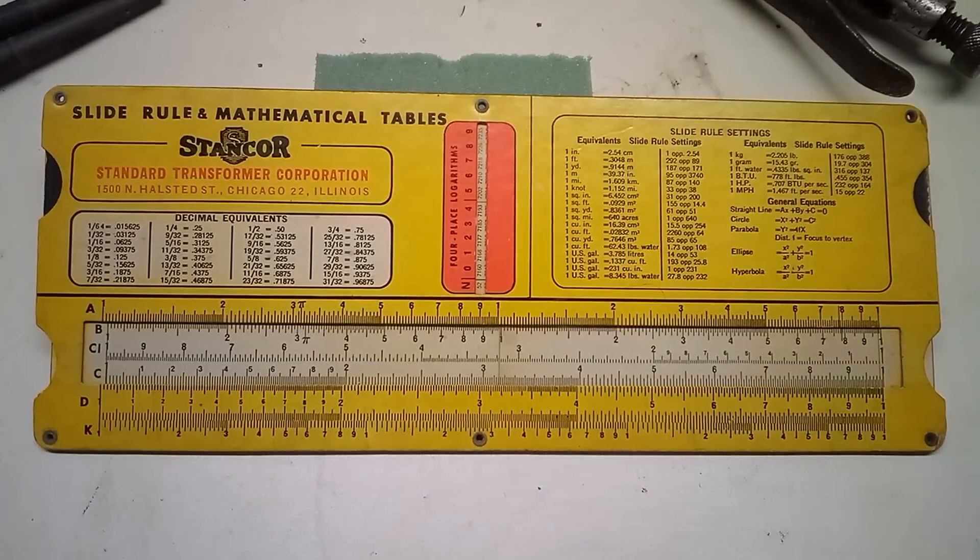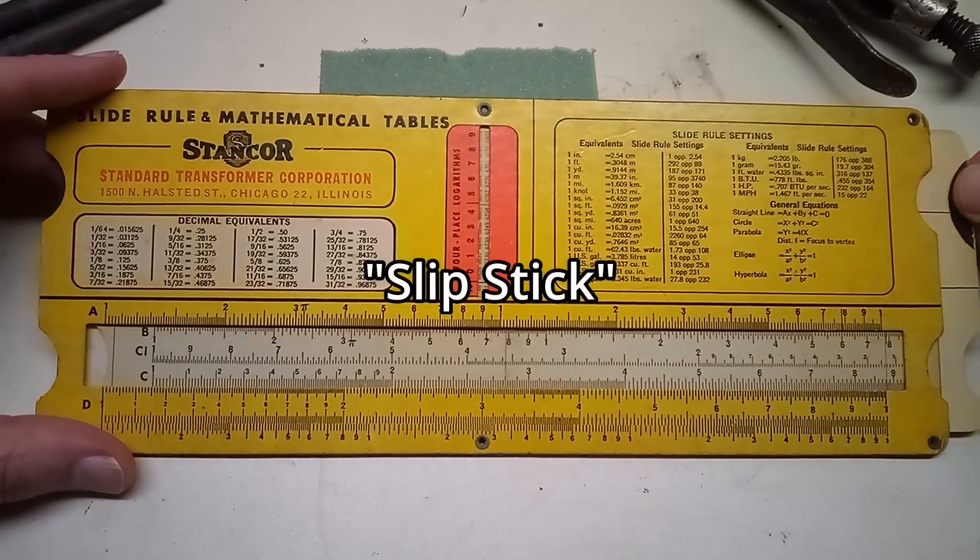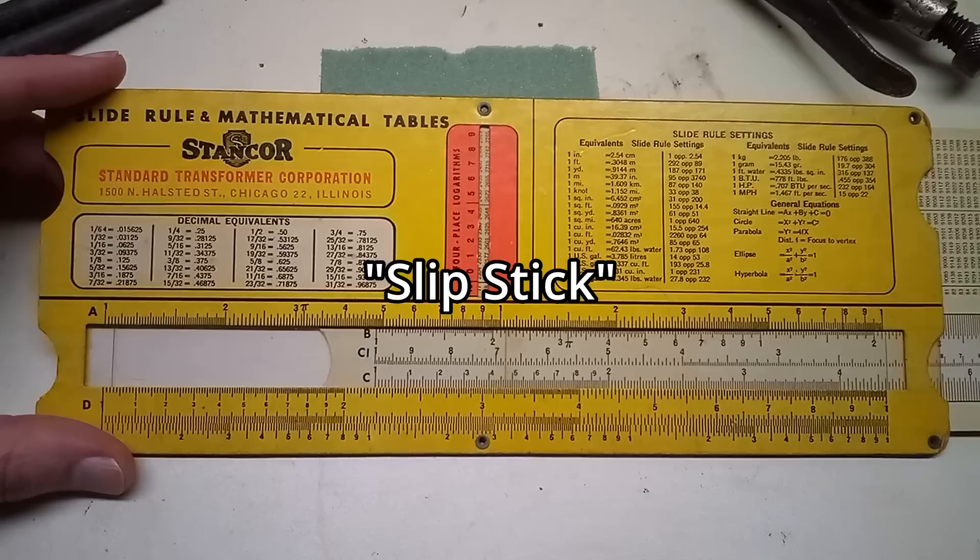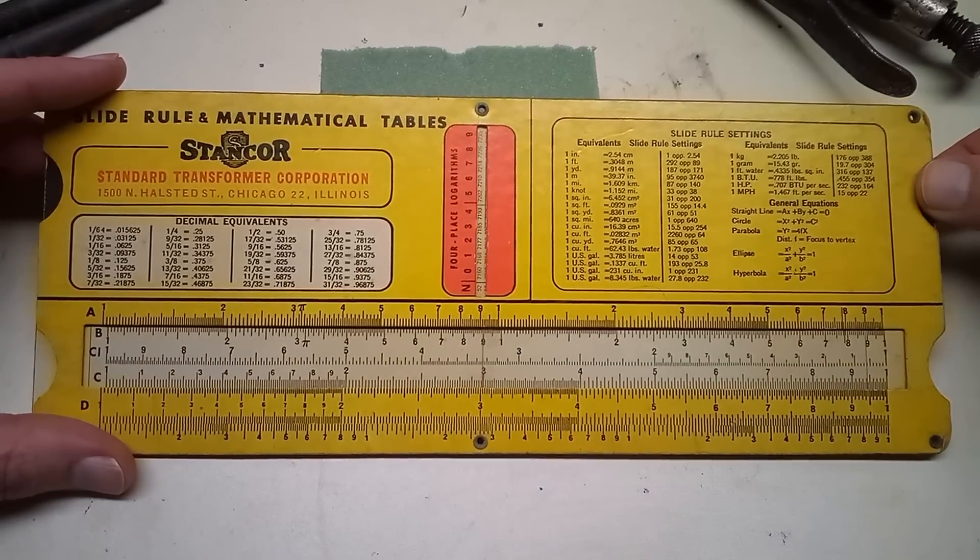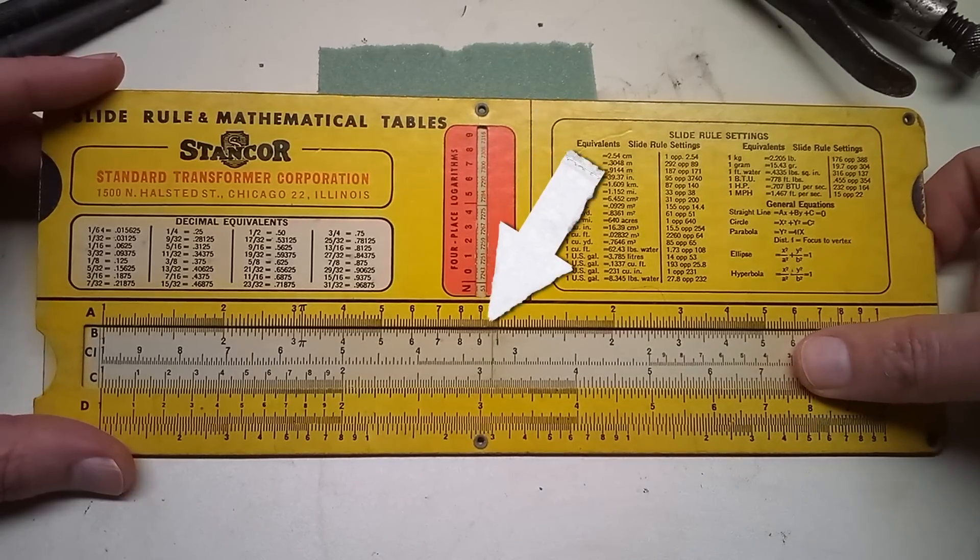The middle scales can slide around. This part is actually called the slip stick—I didn't make that up, that's what it's called. And then there's a clear plastic slider with a center line marked on it that is called our cursor.